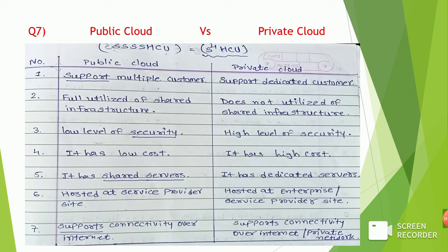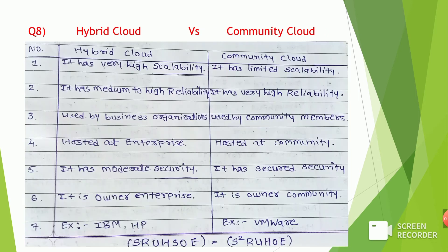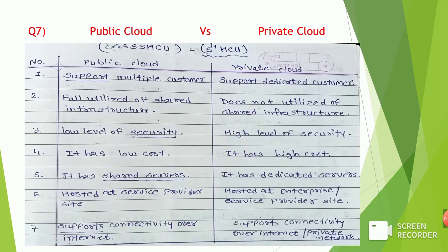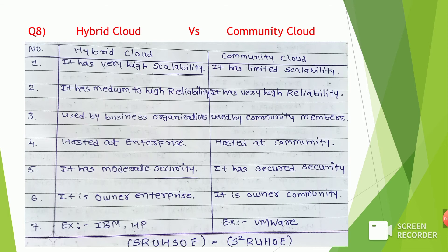Here for public cloud and private cloud, remember S⁴HCU. For the last ones — hybrid cloud and community cloud — remember S²RUHO-E, meaning 'hoi'. You can also remember it like a type of song.